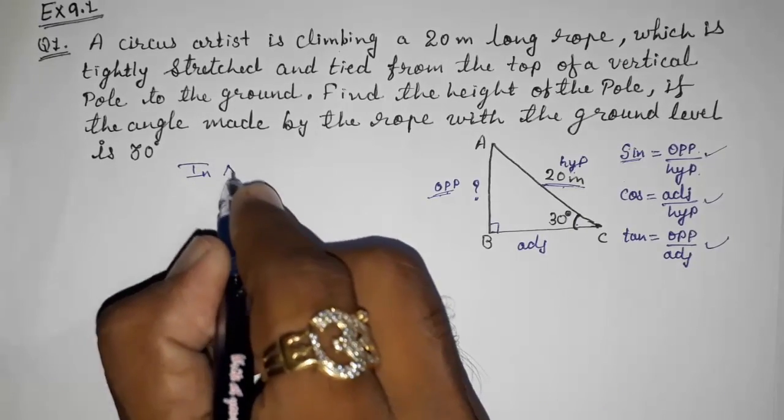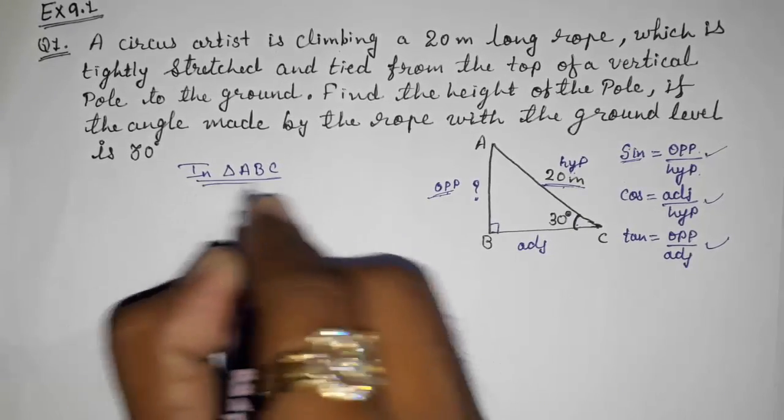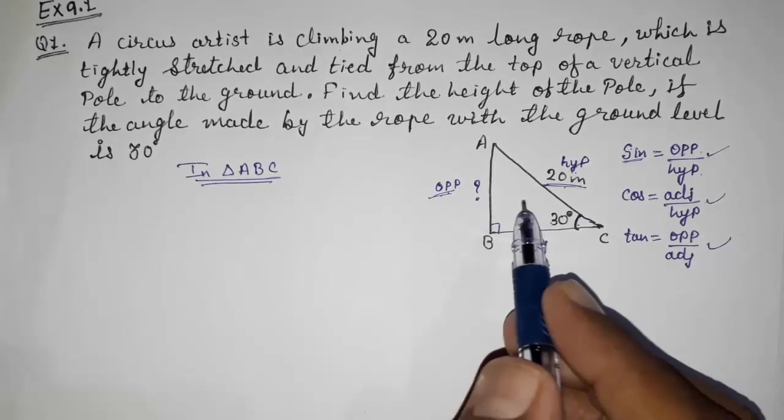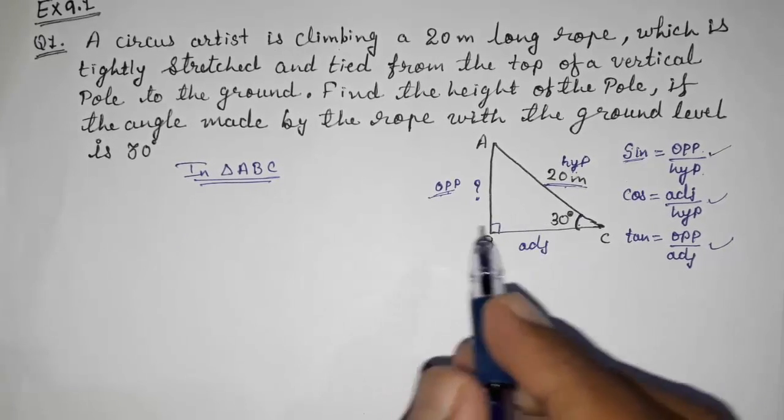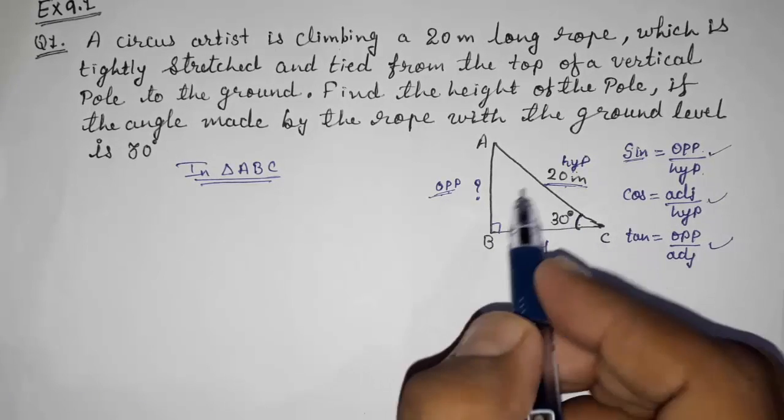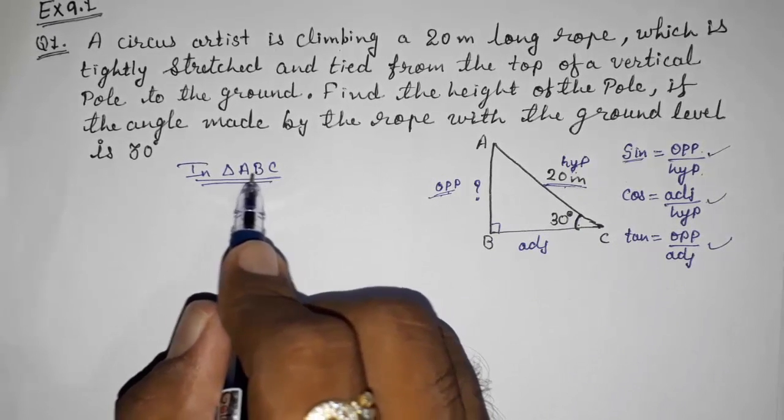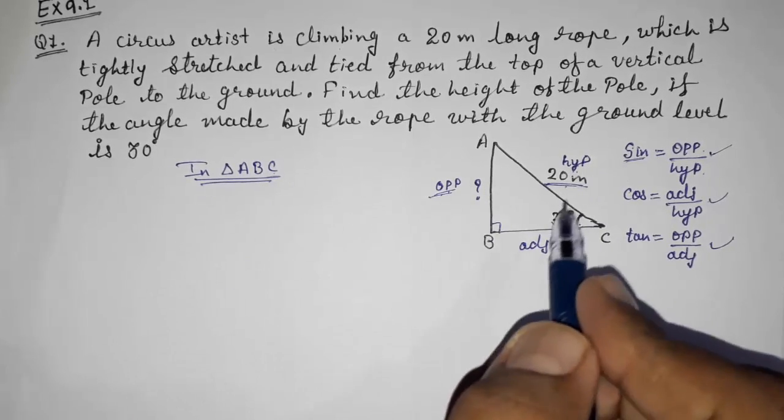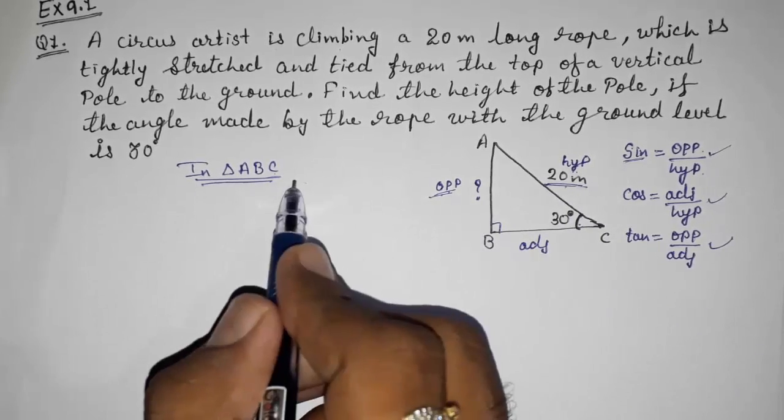In triangle ABC, every time first you have to select the triangle because here one triangle is there, but in many sums there will be many triangles. At that time students get confused, so every time you have to write down the name of the triangle which you had selected and on which you are going to calculate something.